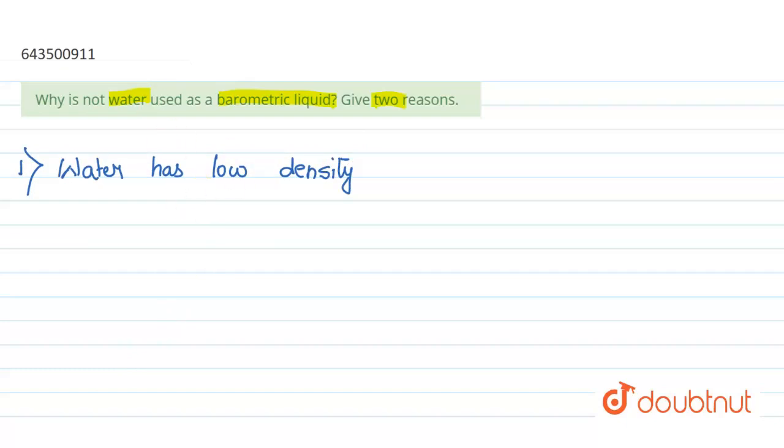So what does this mean? This means that for a lower density, let's compare it to mercury which has comparatively higher density. So suppose this is a barometer with mercury and this is a barometer with water. This is the tube and here this is the tube.